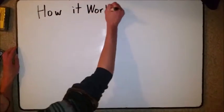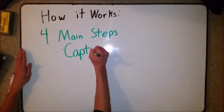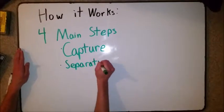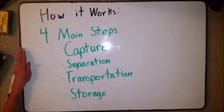How it works: There are four main steps to how carbon capture works with artificial trees. They include the capture, separation, the transportation, along with the storage.